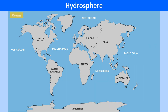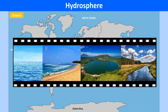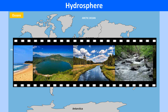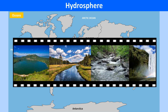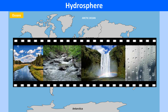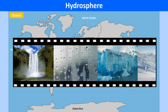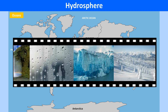All forms of water on our Earth form the hydrosphere. So the oceans, seas, lakes, rivers, streams, waterfalls, water vapour in the air, glaciers, ice and snow are all part of the hydrosphere.